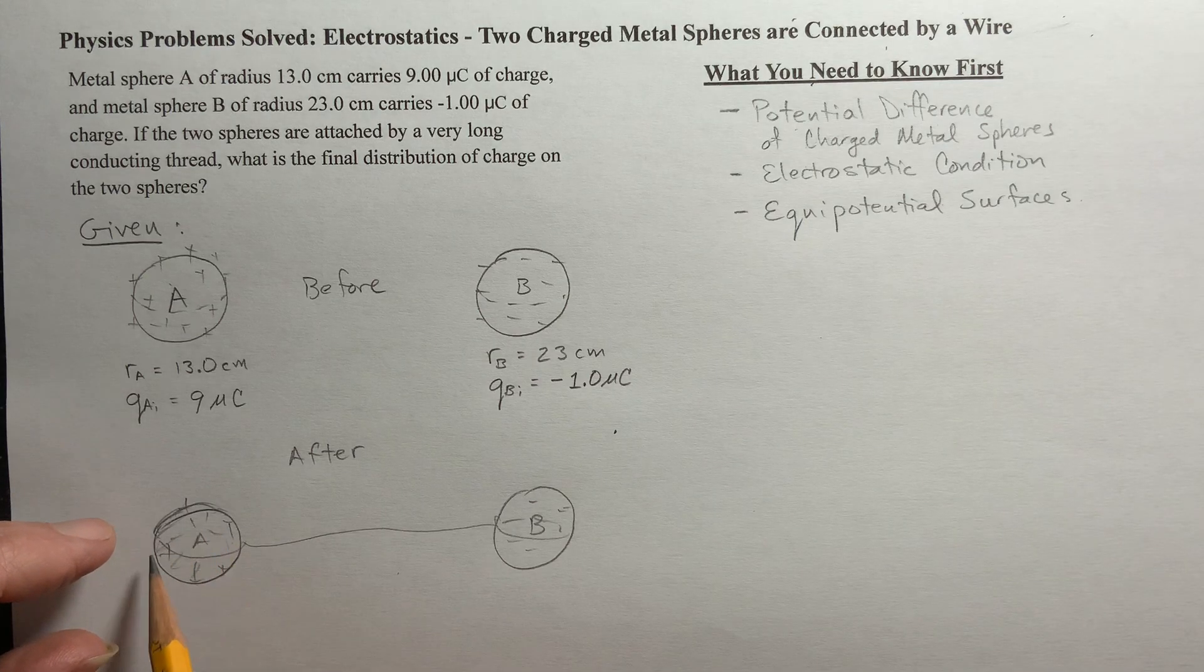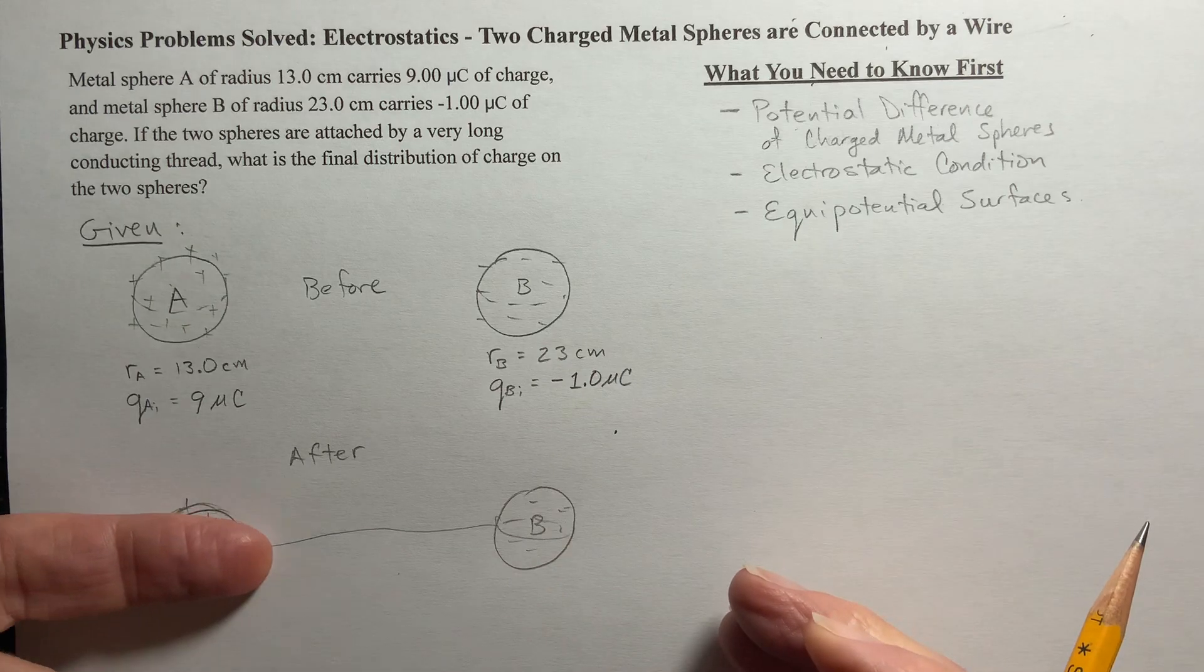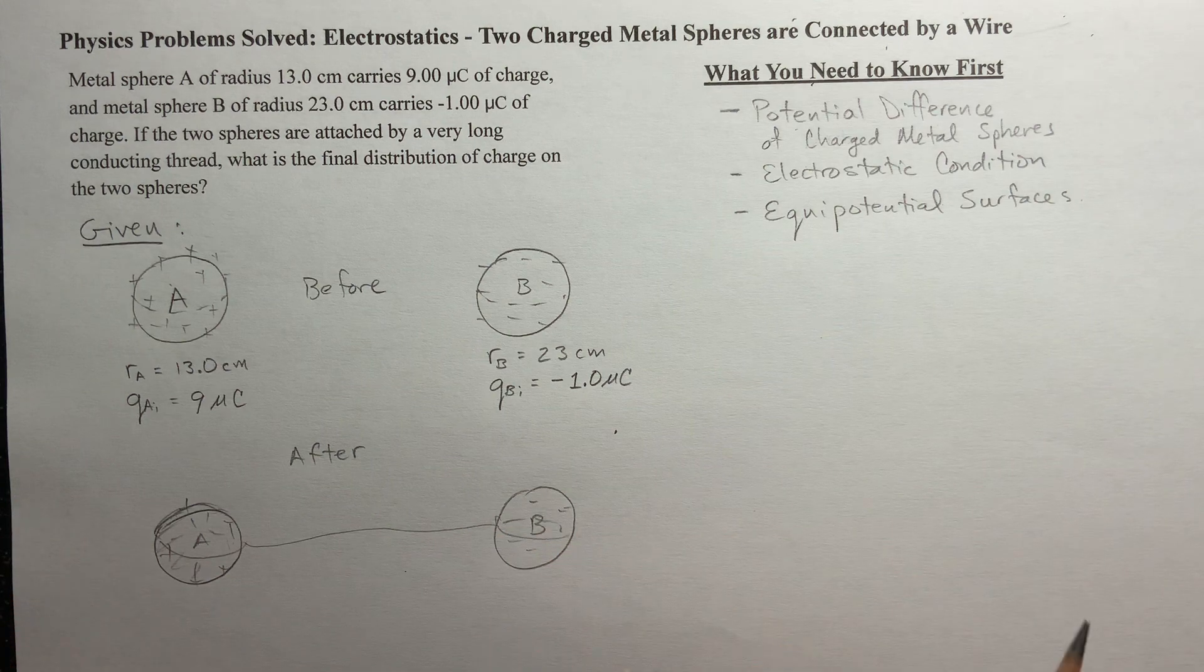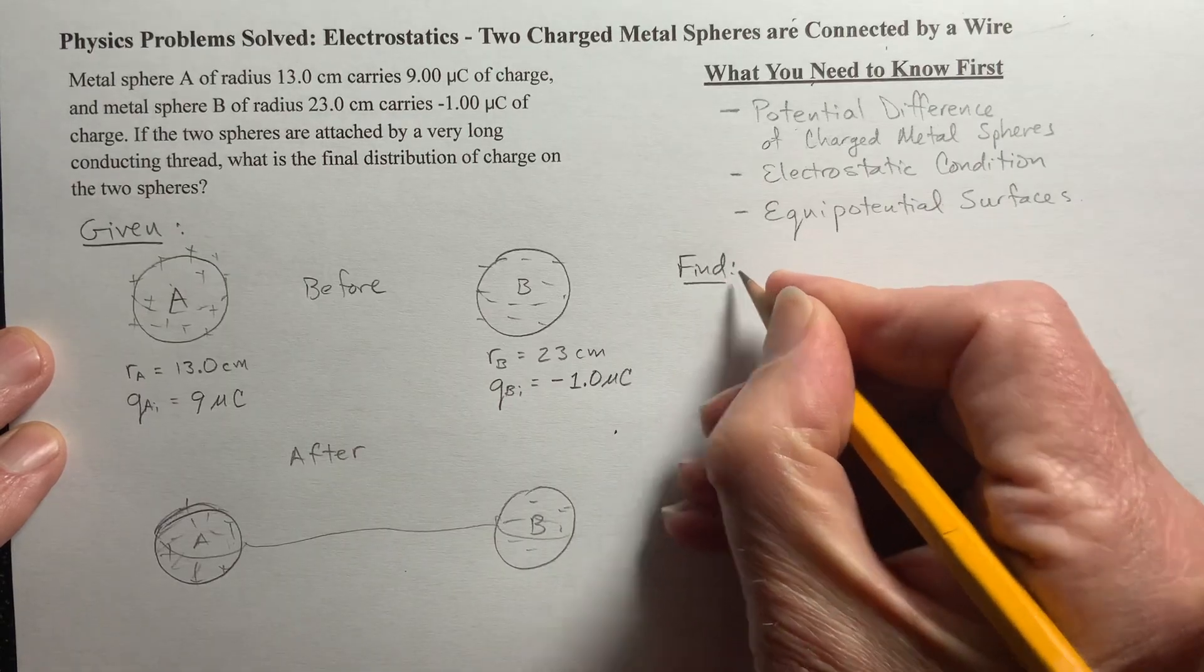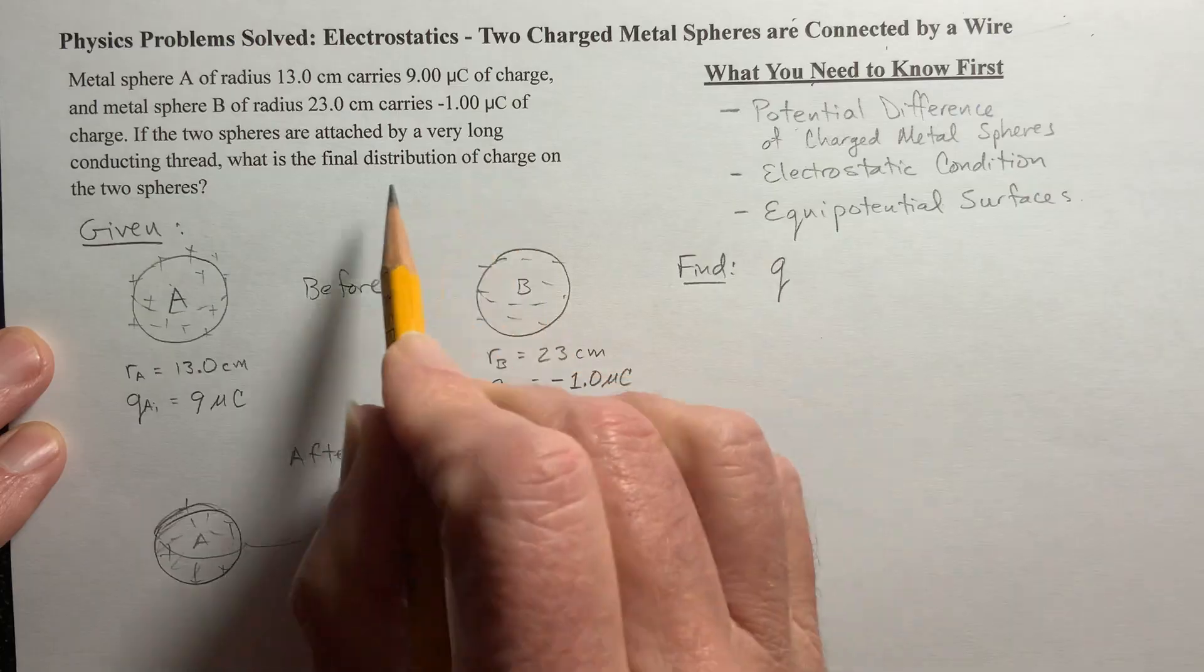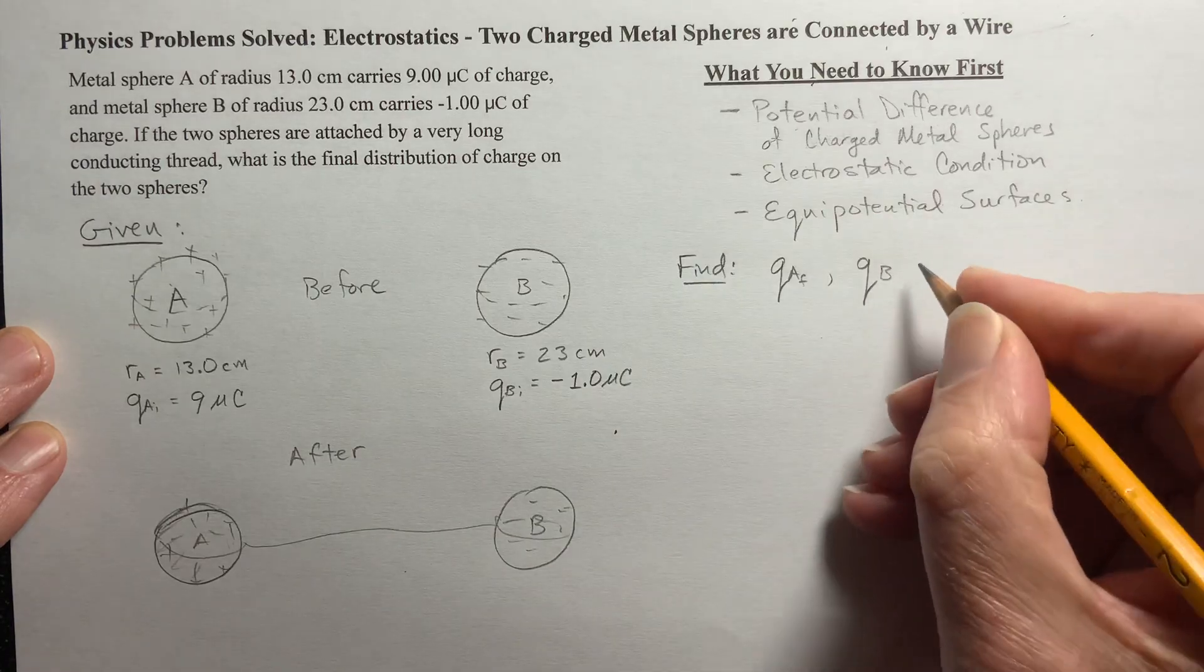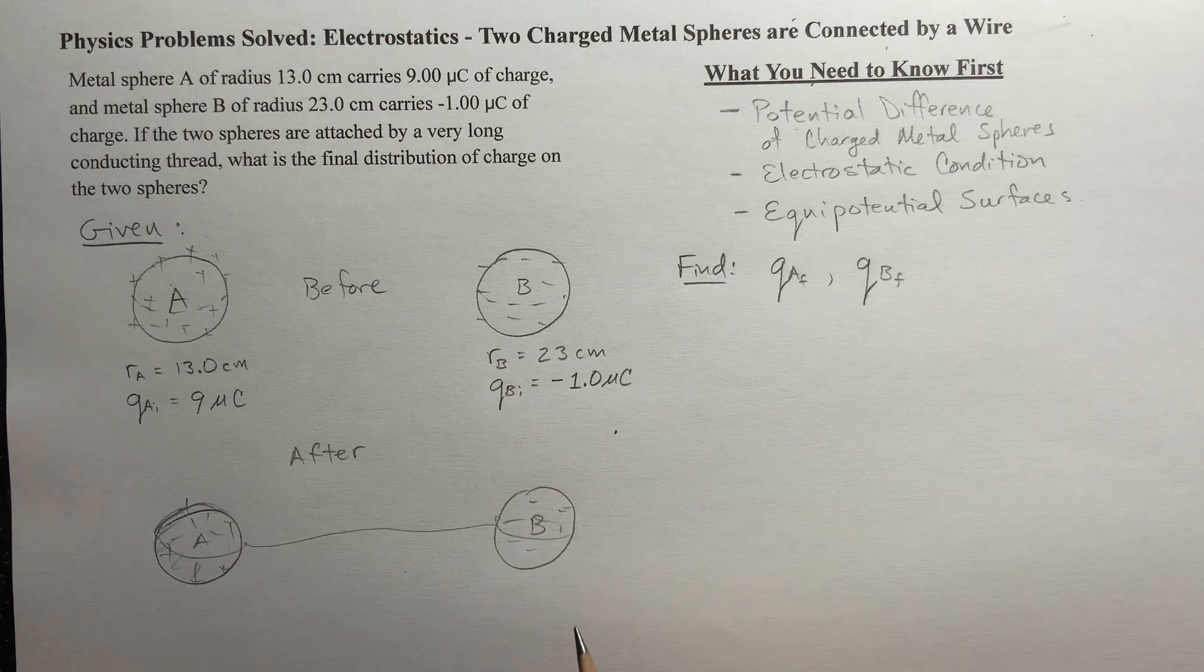Now what's that going to do? Well, here we've got positive charge, it's attracted to this negative charge, and so charge is going to flow through this wire to get to that other sphere. And what we want to know is at the end, here's what we're trying to find. We want to find the final charge. How much charge is on A at the end, and how much charge is on sphere B at the end, after current stops flowing.